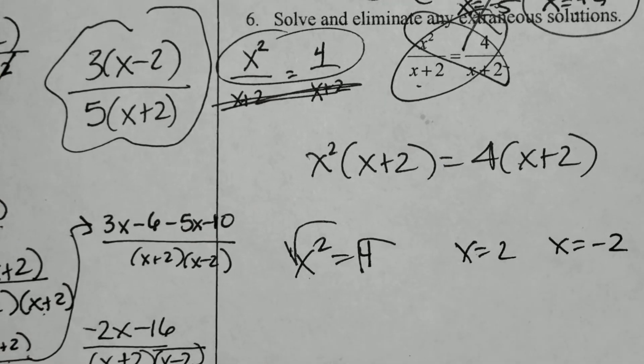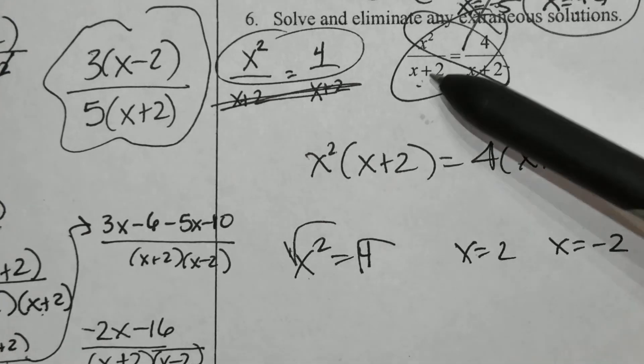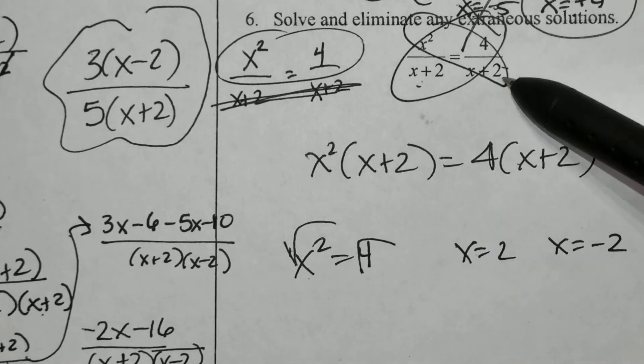Now before you can officially make those your final answers, you always have to check for extraneous solutions. Let's go back up to the original. If I plug a 2 and I get 4, I plug a 2 and I get 4, I'm good to go.